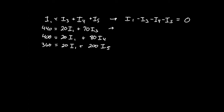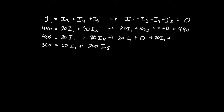For the second equation I'll have 20·I1 and 70·I3. I don't have an i4 term, so I'll put plus zero there to remind myself that spot should be zero in my matrix. I also don't have an I5 term, so plus zero there, and that's equal to 440. For the third equation: 20·I1, no I3 term so zero, the I4 term is 80·I4, no I5 term so zero, and that's equal to 400.